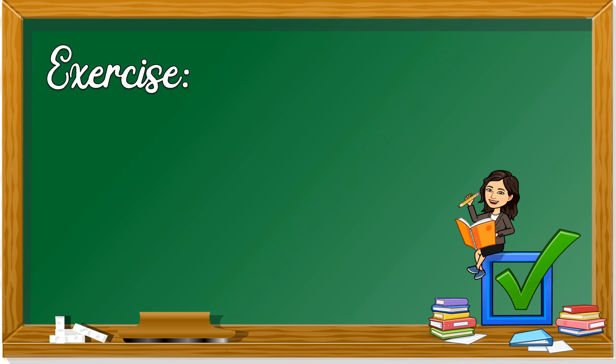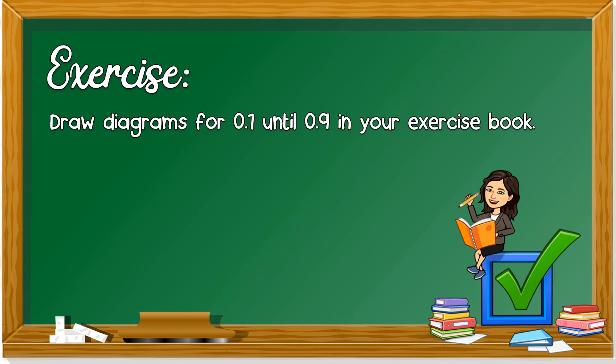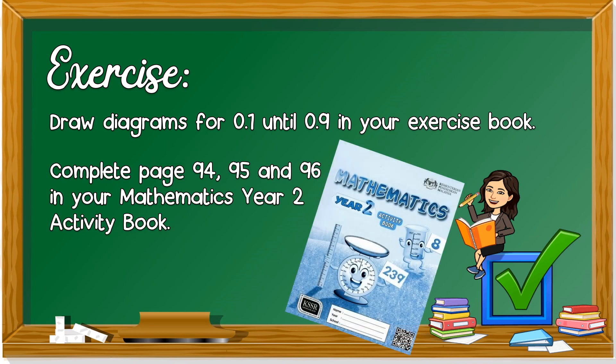For your exercise for today, first thing you got to do is to draw the diagrams from 0.1 until 0.9 in your exercise book. Draw from 0.1, 0.2, 0.3, 0.4, 0.5, 0.6, 0.7, 0.8, 0.9 in your exercise book. And another part is to complete page 94, 95, and 96 in your mathematics year 2 activity book. That's it for today. Thank you and see you again next time. Goodbye.